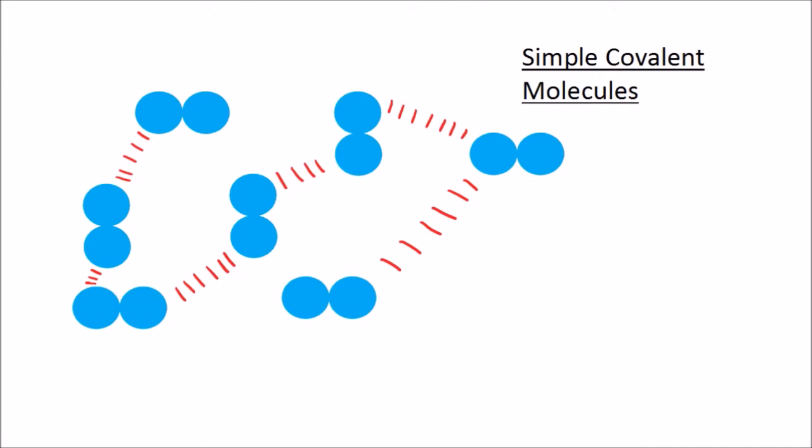Moving on to covalent molecules, most covalently bonded molecules exist as small molecules. Covalent bonds are very strong but usually the intermolecular forces between molecules are weak. So here in this diagram you have two covalently bonded atoms forming a molecule. Now the covalent bond between these two atoms is very very strong; what's weak is the bonding between molecules. And there are many examples of simple covalent molecules.